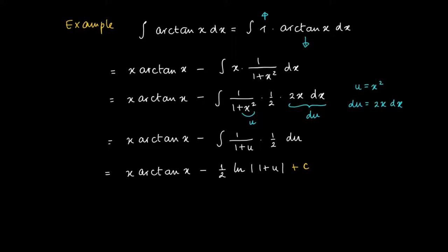So now we substitute u is x squared back to obtain x times arctan x minus a half times the natural logarithm of the absolute value of 1 plus x squared. But we see that we may leave out the absolute value since 1 plus x squared is always a positive number. So we get x arctan x minus a half times the log of 1 plus x squared plus an integration constant c.